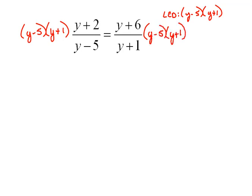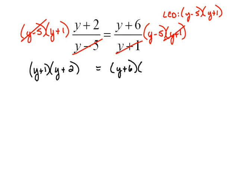Now for the left-hand side, our y minus 5s will cancel, so we have y plus 1 times y plus 2 equals... now here on the right-hand side, our y plus 1s will cancel, so we have y plus 6 times y minus 5. Now at least we've gotten rid of the denominators and we can continue solving.